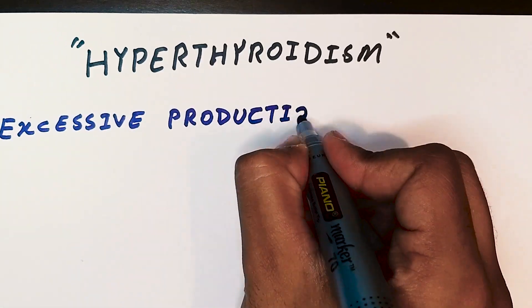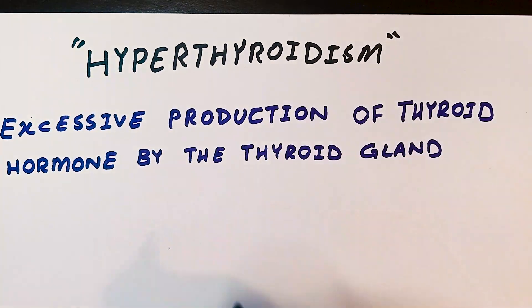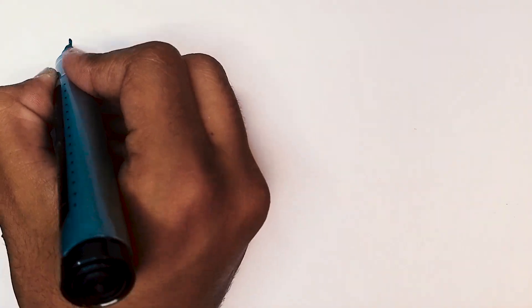Hyperthyroidism is a condition where the thyroid gland produces an excess amount of thyroid hormones. This hormonal imbalance can lead to a range of symptoms and complications.